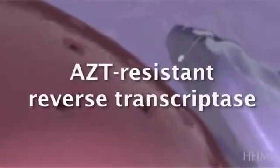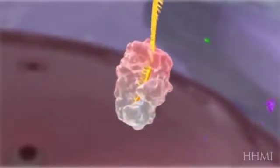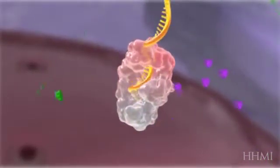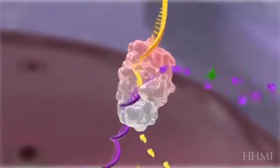Here is a mutant form of reverse transcriptase that is resistant to AZT. It's resistant because its mutant molecular structure does not allow AZT to be used as a substitute for thymidine.